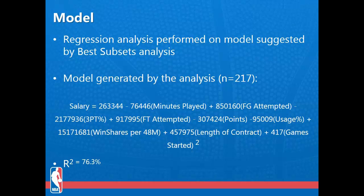At first glance, some of the coefficients in our model might not make sense. For instance, it seems unlikely that more points scored or more minutes played would correspond to a decrease in salary. However, this can be explained by the multicollinearity present in our model. Field goals attempted is highly correlated with both points and usage percentage, and the coefficient for field goals attempted is much greater than those for points or usage percentage. Thus, the supposed negative impact of points and usage percentage is counterbalanced by the larger positive impact of field goals attempted. The same concept applies to the games started squared term and the minutes played term.